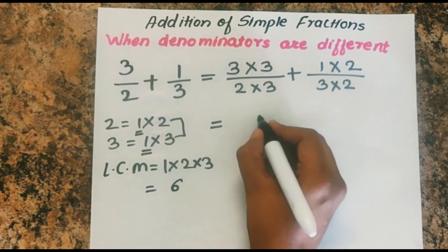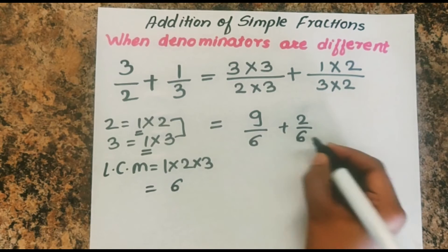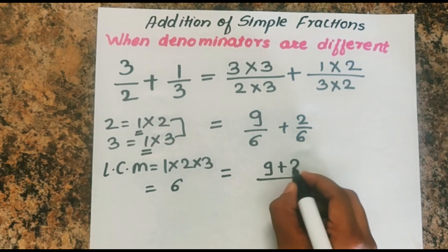Make the denominators the same, which becomes 9 upon 6 plus 2 upon 6. Now as denominators are the same, you can add.